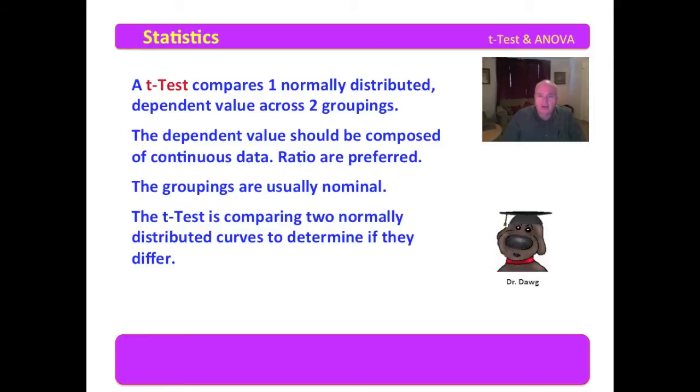The t-test is comparing two normally distributed curves to see if they differ. Now, I want you to keep that in mind, normally distributed. The values that we're comparing for the groups are required to be normally distributed. If they are not normally distributed, then we will do a nonparametric design, which we shall study in later modules. The t-test is often referred to as the difference of two means. In other words, we have two distributions, and we are comparing them to see if they differ.